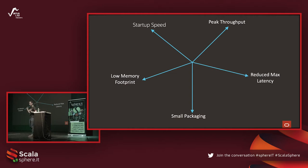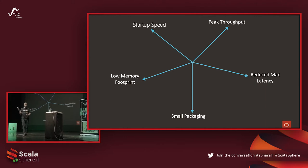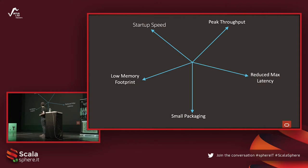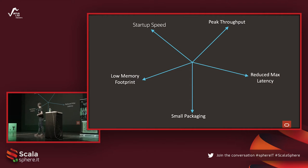Since my talk is about performance, what is performance? It's not as obvious as we'd imagine. Usually when we think about performance, we think about peak throughput — what's the best performance in terms of operations per second or requests served per second. But you may also be very interested in reducing max latency, meaning the worst time to serve a single request. You may care about startup time, memory footprint in the cloud, and packaging size — because in cloud environments you are charged based on memory usage, and smaller containers are easier to work with.